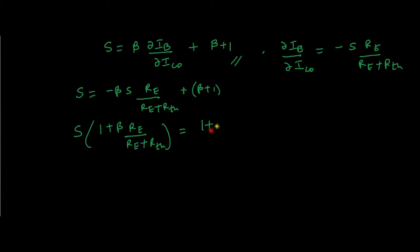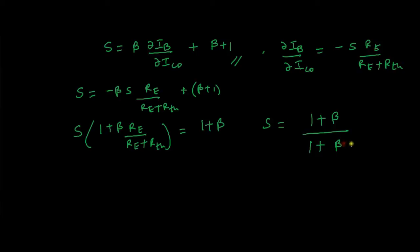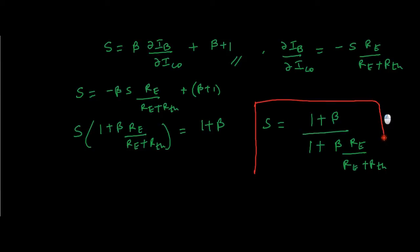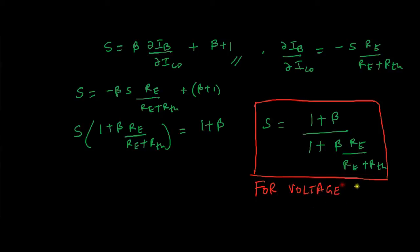Rearranging — shifting terms to one side — the final stability factor equation becomes: S = (1 + β) / (1 + β·RE/(RE + RTH)). This is the stability factor for voltage divider bias.